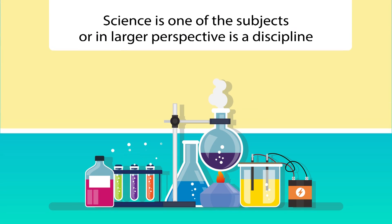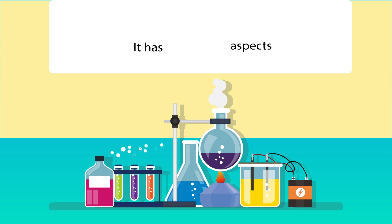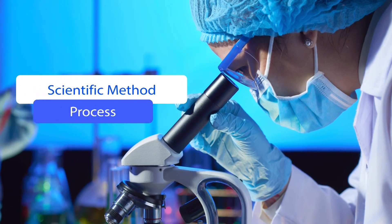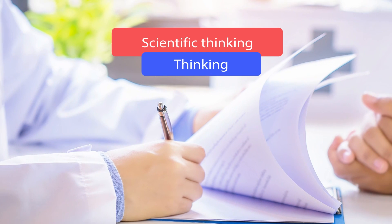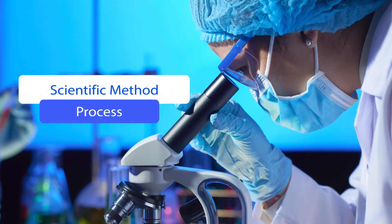Let's understand the role of science in inculcation of values. Science is a discipline which has three aspects to it: scientific knowledge, which is the product of science; scientific method, which is the process of science; and scientific thinking, which involves a particular kind of thinking — rational thinking, thinking based on reason.